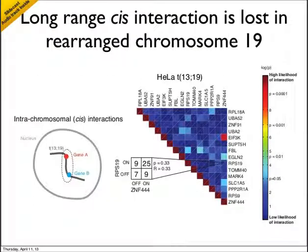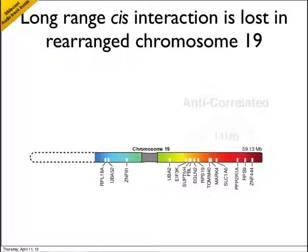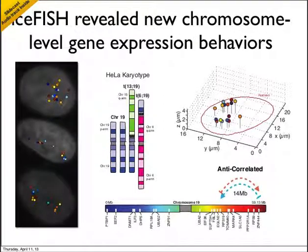Consistent with its differences in transcriptional frequency, the translocated portion of chromosome 19 did not display this cis interaction. This suggests that the long-range cis interaction between RPS19 and ZNF444 has been disrupted by the translocation event or the resulting structure of the derivative chromosome. In summary, the technology of ICEFISH and the concepts of single chromosome transcriptional profiling will be important for understanding how chromosome structure influences gene expression.